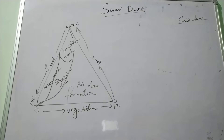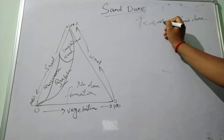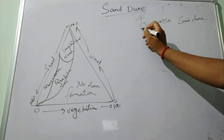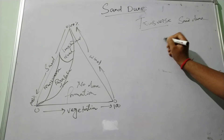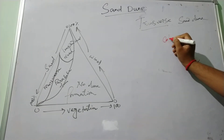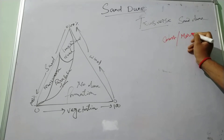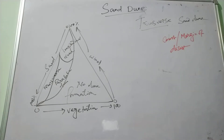Transverse sand dunes are formed when the direction of the prevailing wind is in the transverse direction. These dunes are mostly observed around the coast or in the margin of the desert.